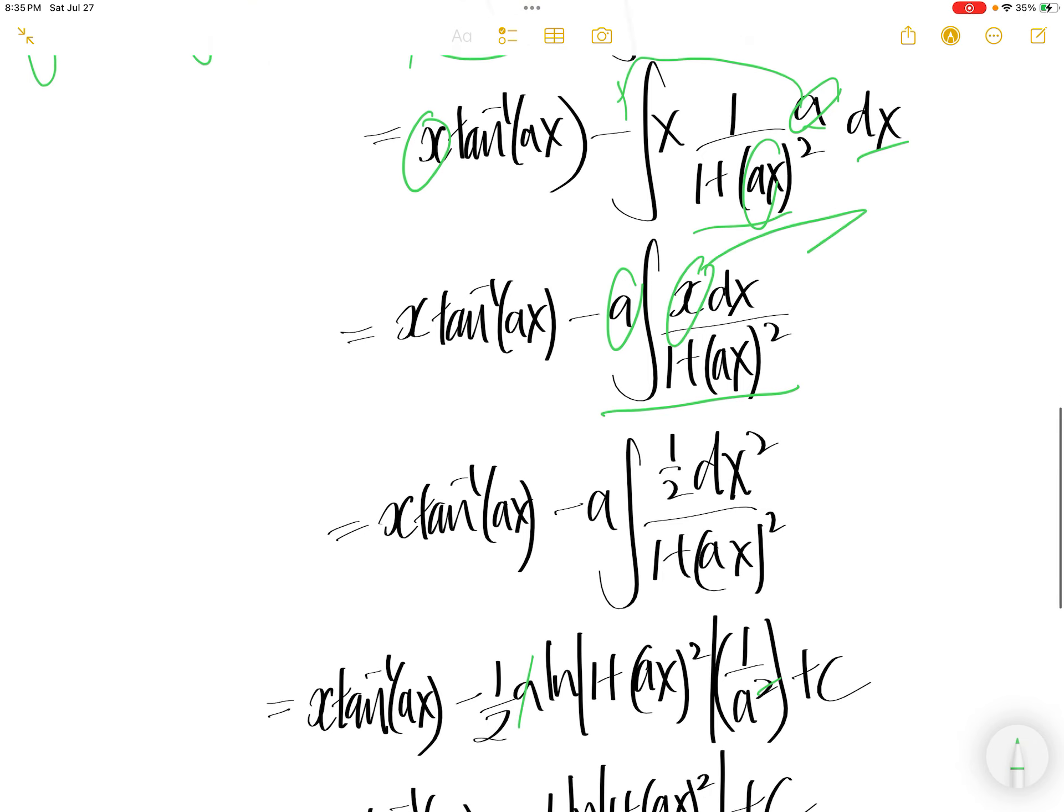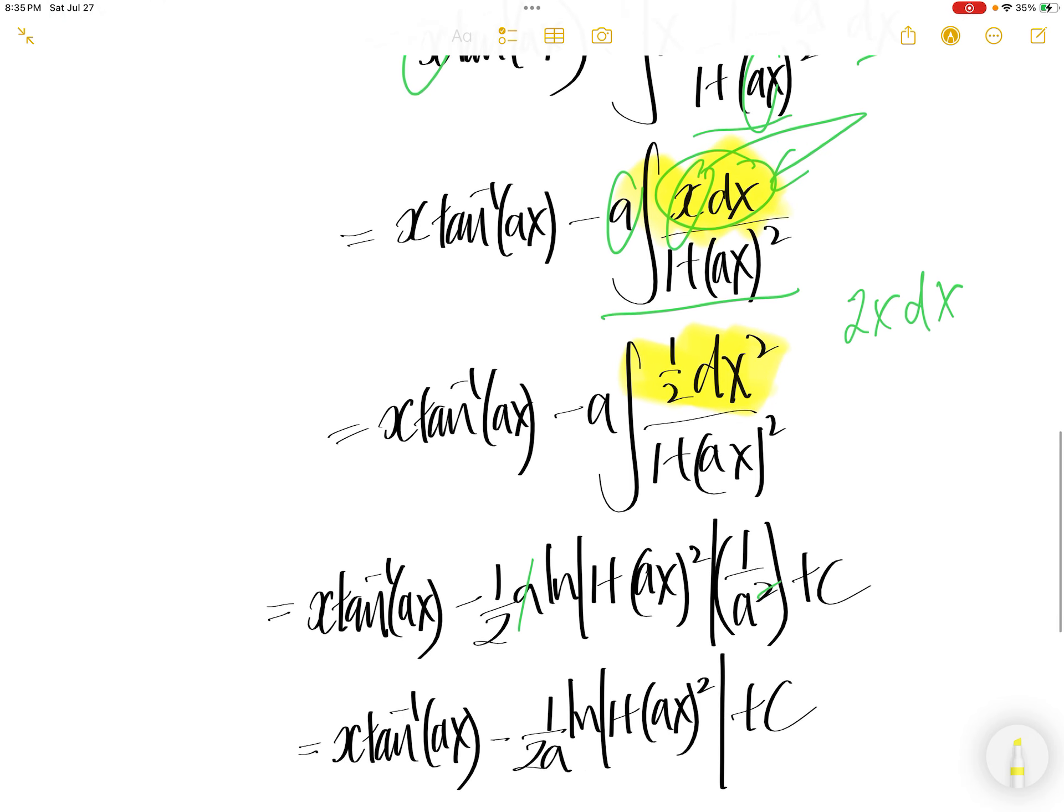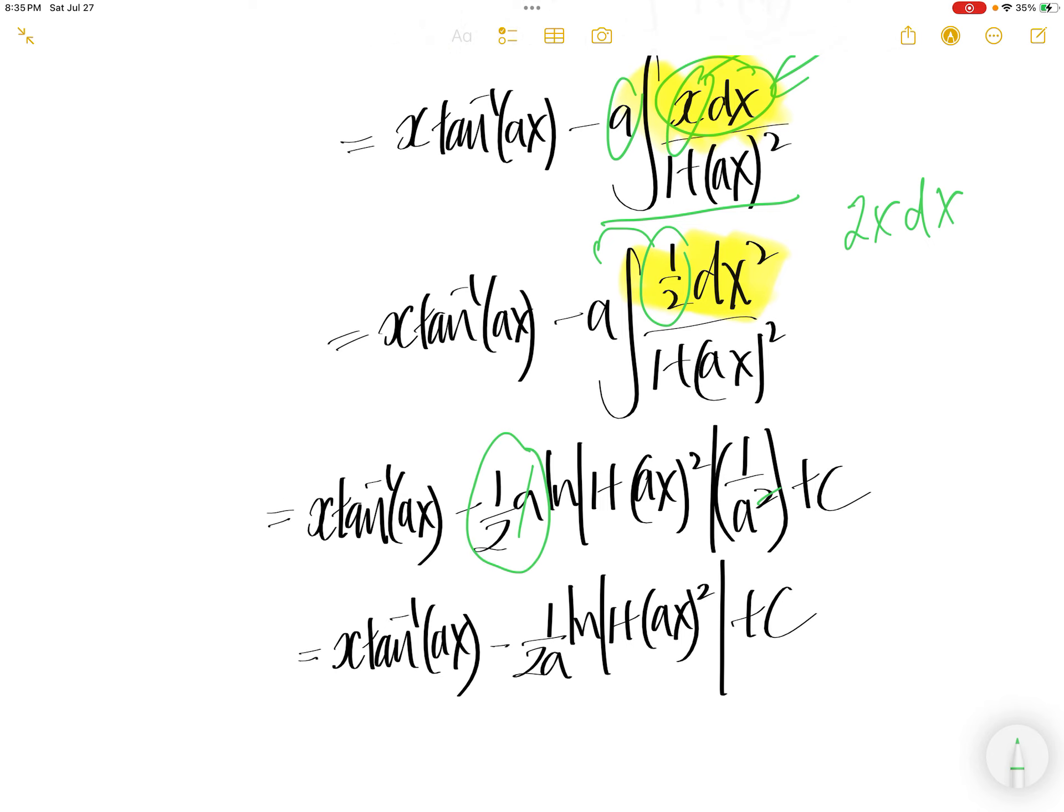And you have integral of x dx over 1 plus Ax square. Push this into dx. The derivative of x square is 2x dx. Over here we only have x dx, so we have to divide by 2. Half constant out, multiply with A you get half A. And then you have integral of dx square over 1 plus A square x square.